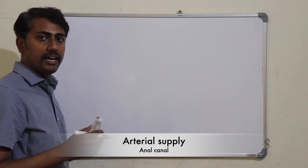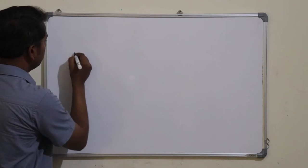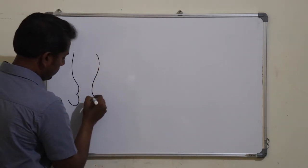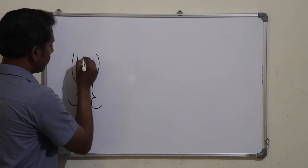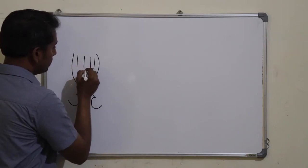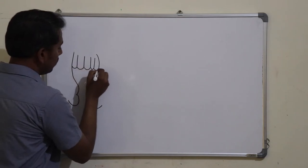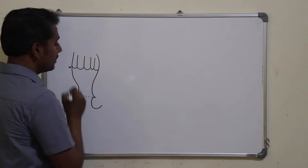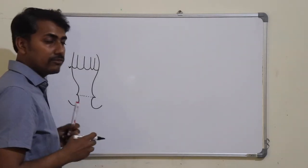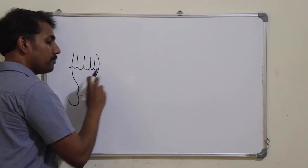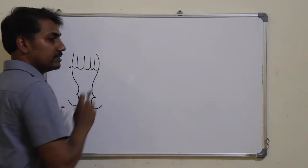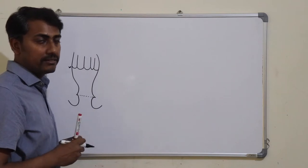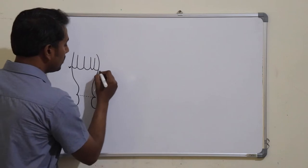Now we look at the blood supply of the anal canal. Let us draw the anal canal. This is the anal canal, these were the anal columns, these were the anal valves, forming the pectinate line. This was the white line of Hilton. This pectinate line is a very important landmark, as it divides the anal canal into an upper part and a lower part, and each of these parts will have different blood supply, different lymphatic drainage, and also different nerve supply. Therefore this pectinate line is also known as the watershed line.